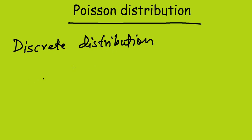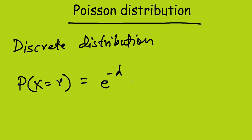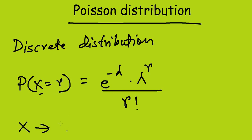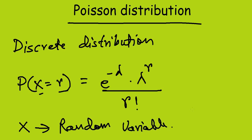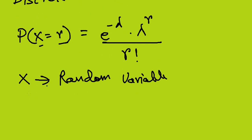The Poisson distribution equation looks like this: the probability of X equal to r is equal to e to the power minus lambda, times lambda to the power r, divided by r factorial. Here, X is the random variable and r is the number of occurrences.